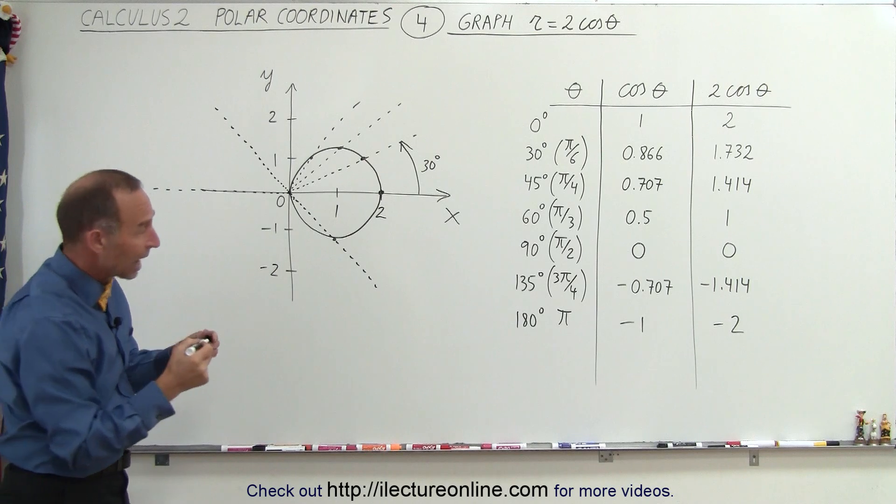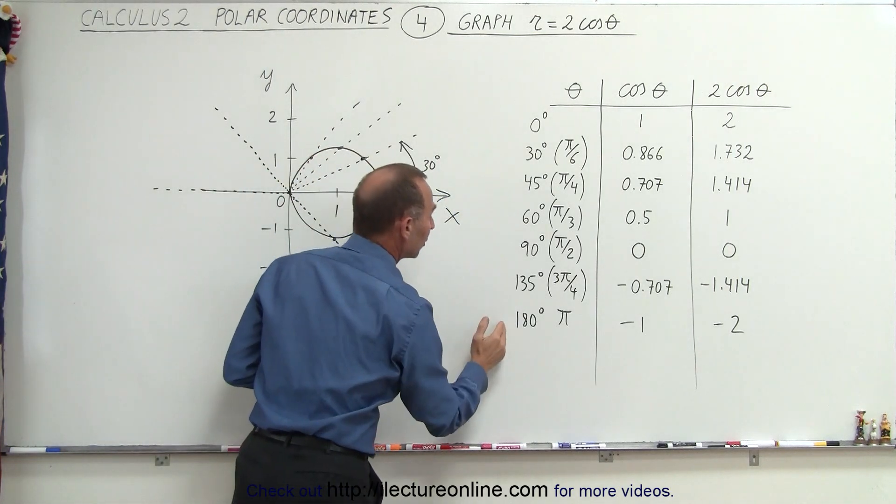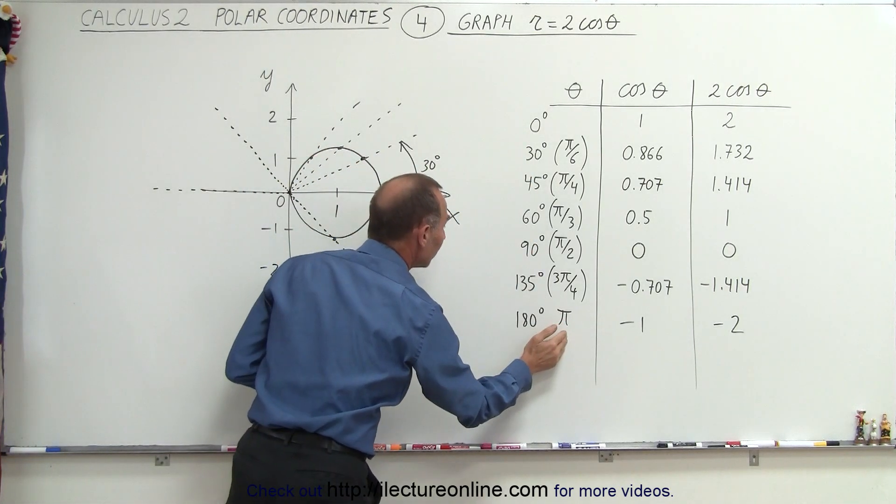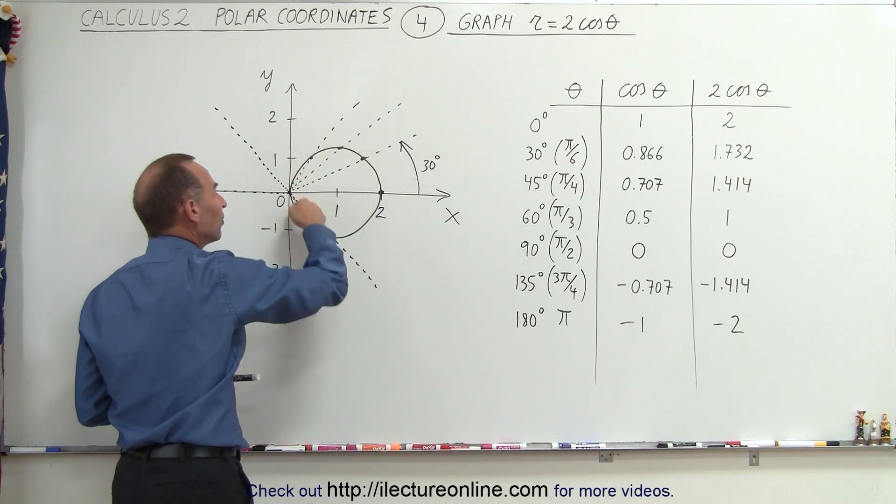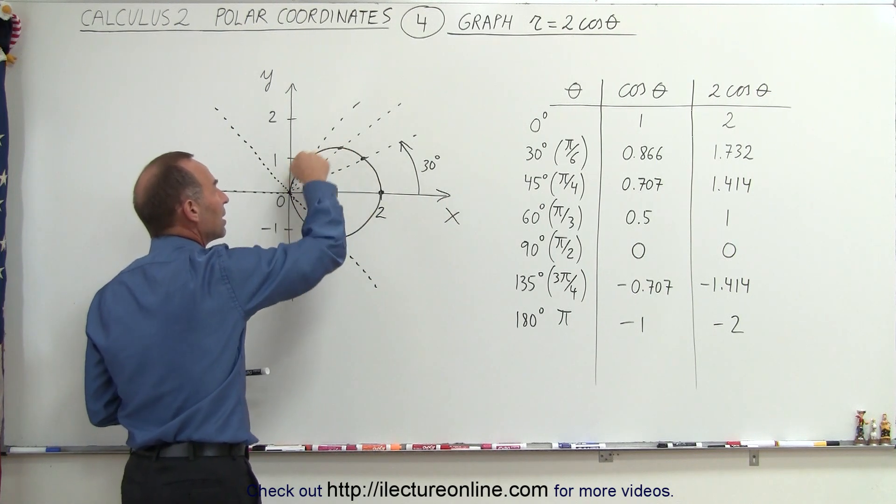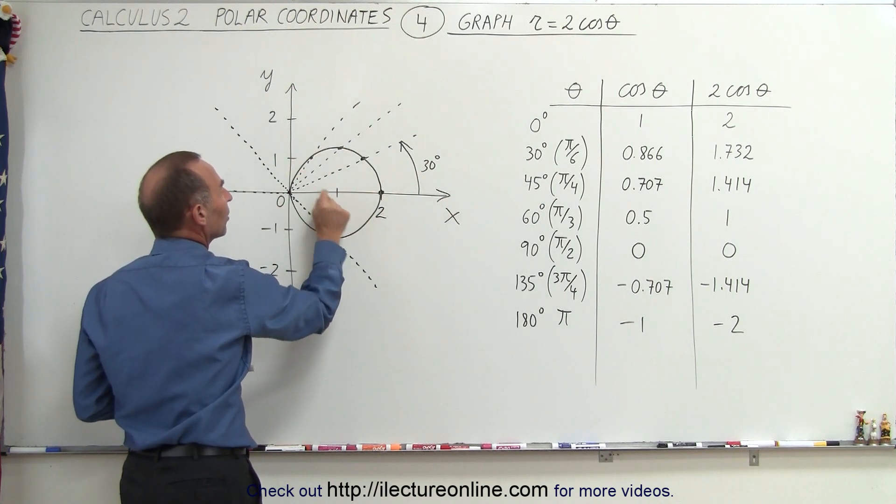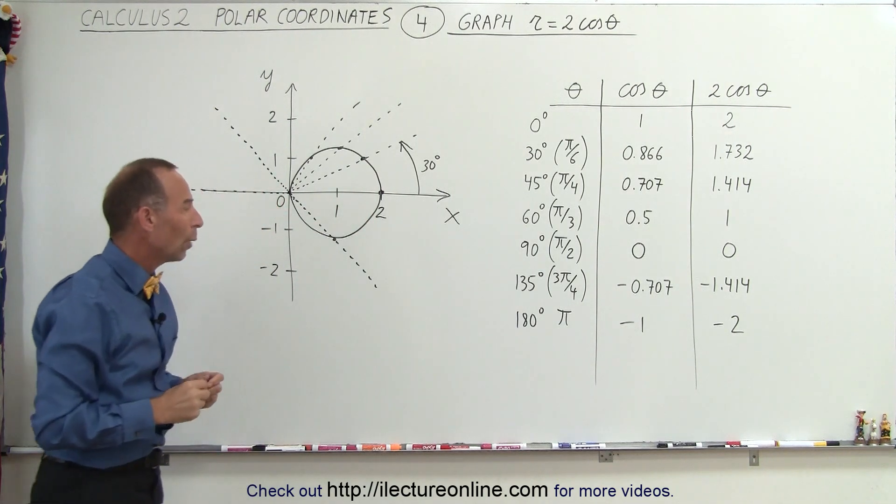And so when we move through an angle from 0 to 180 degrees, or from 0 to pi radians, we can see that the graph then forms a complete circle right here, with radius 1 centered at x equals 1, y equals 0.